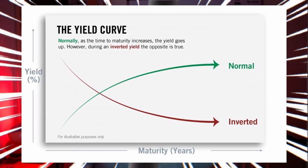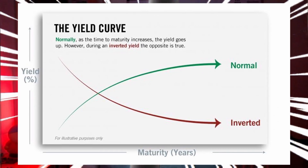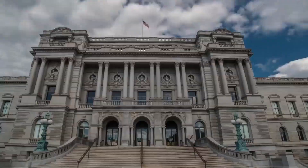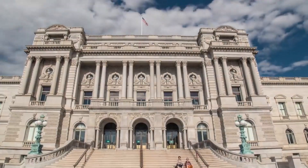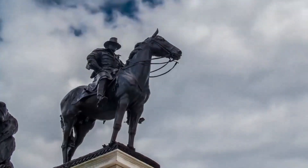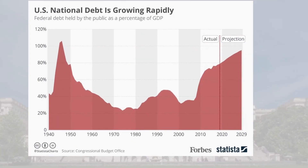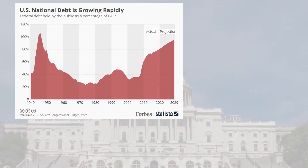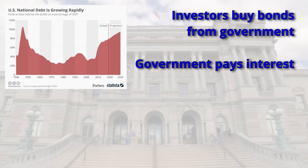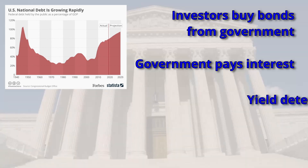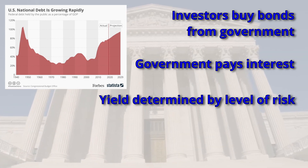If you know anything about the inverted yield curve and what it means, then you're doing pretty well, so skip to the next chapter if you want. Otherwise, here's a quick summary. The US government uses instruments such as bonds sold to investors to cover part of their debt. Investors who buy that debt expect interest in return, and the rate of interest is calculated from the level of risk in the government being able to keep up the payments.